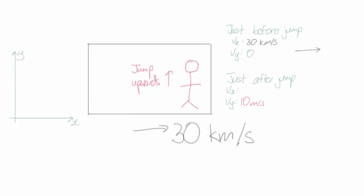So just before the jump, I was moving with a velocity of 30 kilometers per second in the x direction. And just after the jump, I still have that velocity. I'm still moving at 30 kilometers per second.